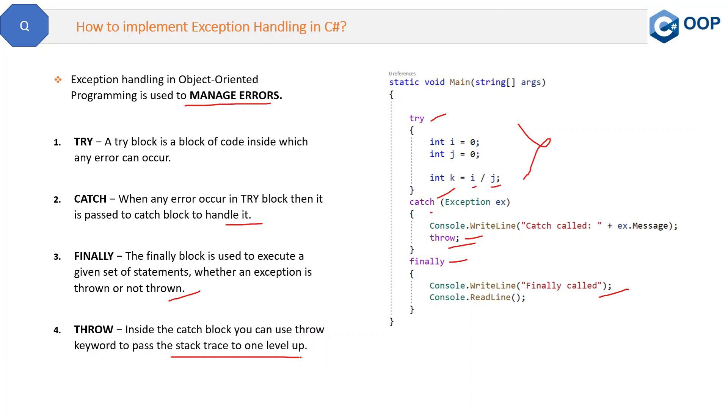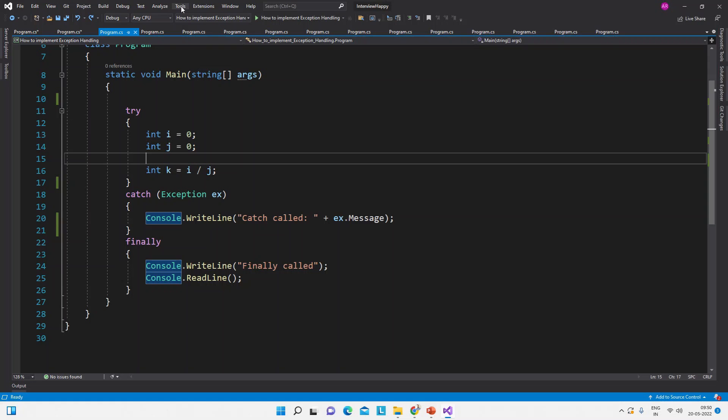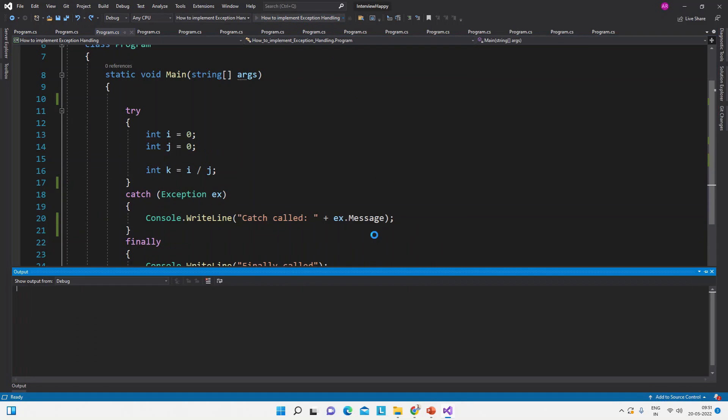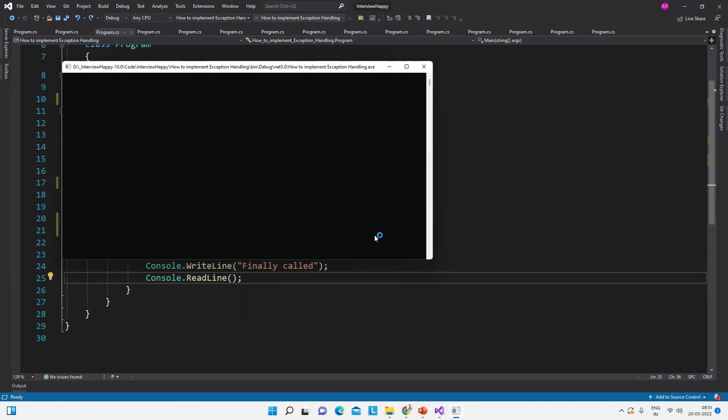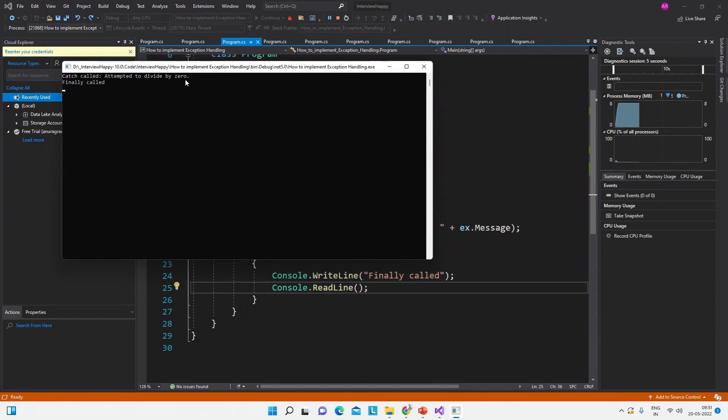See, here is the code. We are trying to divide zero by zero, which will throw an error. So this will execute and then finally will also execute. So let me show you this. See, the first line: catch called, attempted to divide by zero. This is the exception message, and the finally is also called.